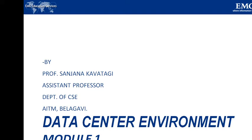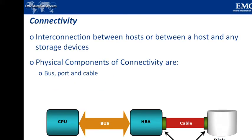Let us see the connectivity part here. Connectivity refers to the interconnection between hosts, or between a host and peripheral devices, such as printers or storage devices — basically input, output, and additional devices connected with the system. The discussion here focuses only on the connectivity between the host and the storage device. Connectivity and communication between host and storage device are enabled using physical components and interface protocols.